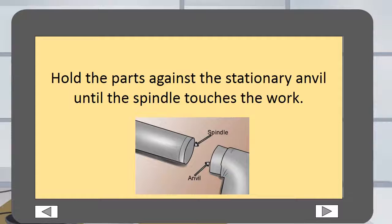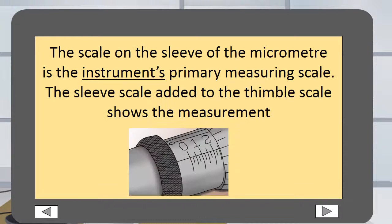Hold the parts against the stationary anvil until the spindle touches the work. The scale on the sleeve of the micrometer is the instrument's primary measuring scale. The sleeve scale added to the thimble scale shows the measurement.